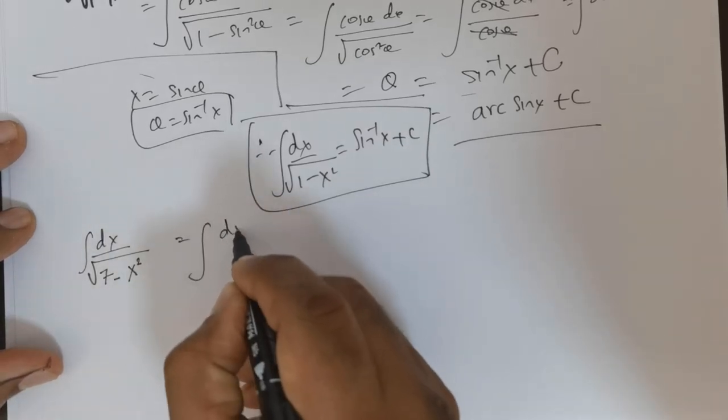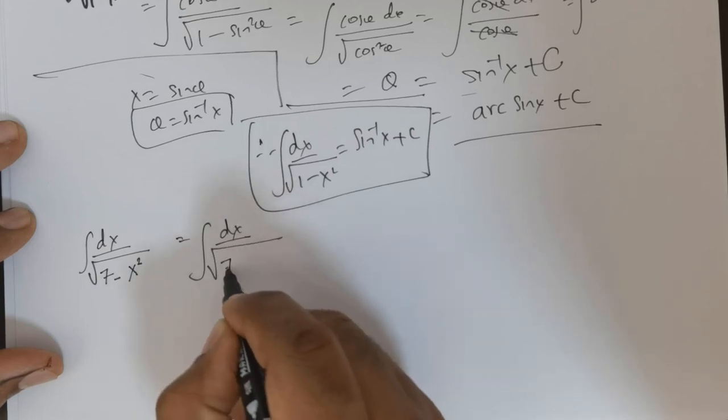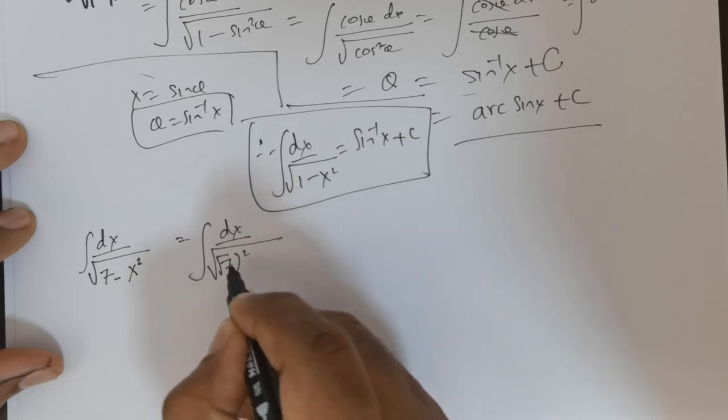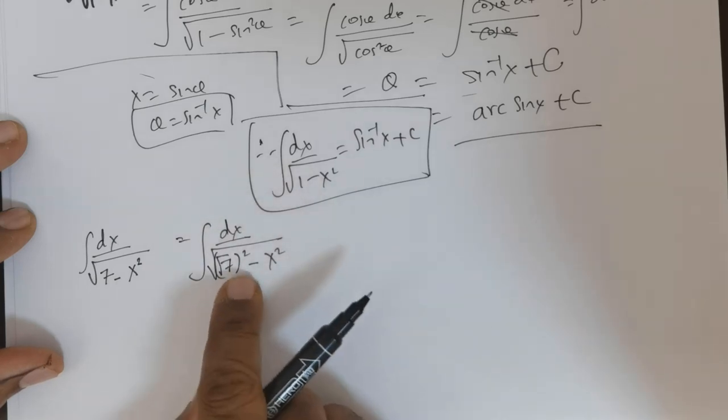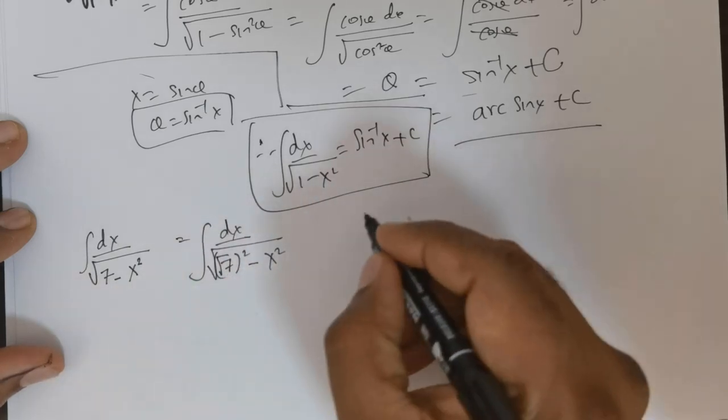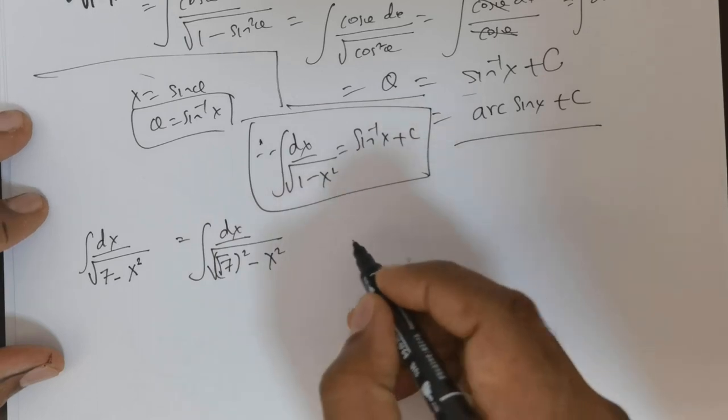Now foremost, I would rewrite this as the integral of dx over the square root of 7 raised to the power of 2 minus x squared. And root 7 squared is going to be 7, so there isn't any change being brought in.